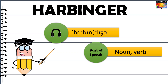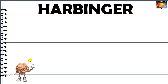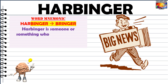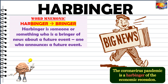Next, we have the word harbinger, which is used mostly as a noun and sometimes as a verb. Pay attention to its pronunciation — it's harbinger, not harbinger. The memory clue for this word is how it ends: binger sounds like bringer. Harbinger is someone or something who is a bringer of news about a future event — one who announces a future event. For example: the coronavirus pandemic is a harbinger of the economic recession that we are going to face. A harbinger is something that comes before and shows what will follow in the future.